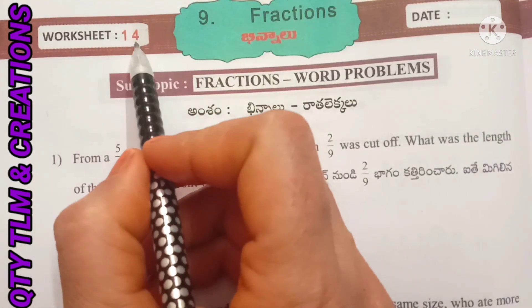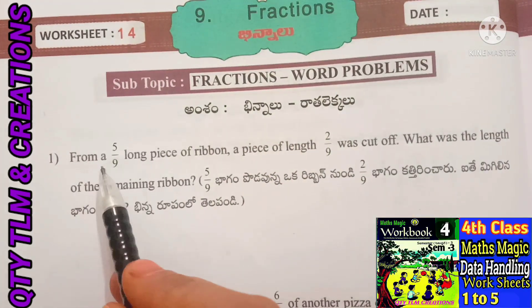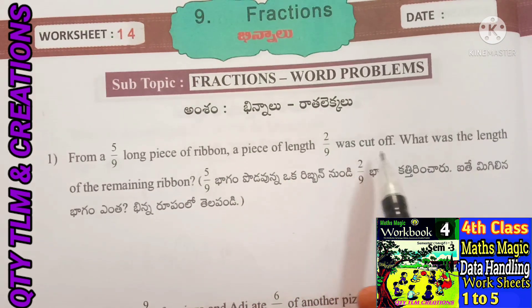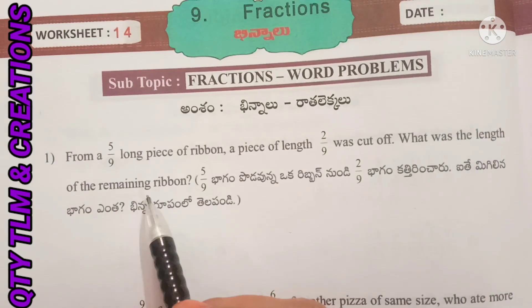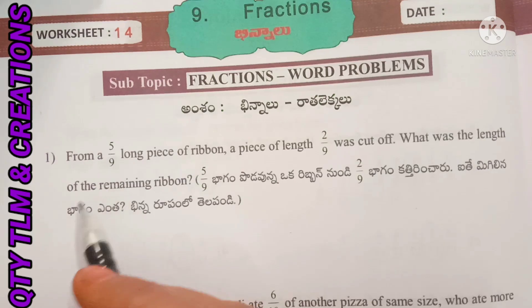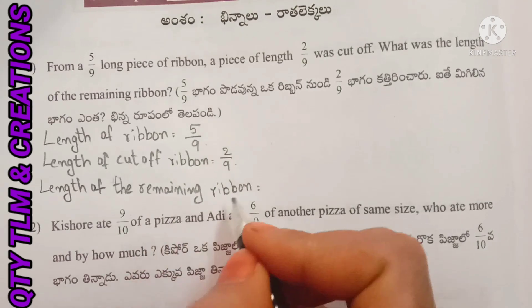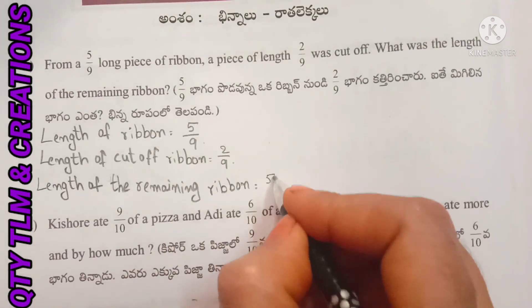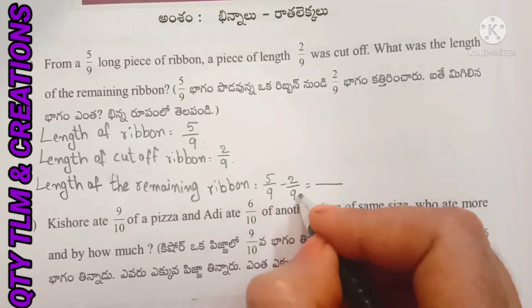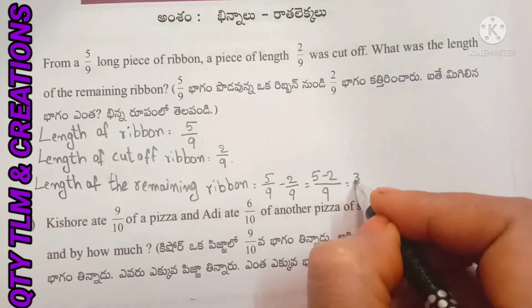Next, Worksheet No. 14, subtopic: Fractions Word Problems. First question: From a 5 by 9 long piece of ribbon, a piece of length 2 by 9 was cut off. What was the length of the remaining ribbon? Total length of ribbon is 5 by 9. Length cut off was 2 by 9. Length of remaining ribbon = 5 by 9 minus 2 by 9, denominator is 9, so 5 minus 2 equals 3 by 9.